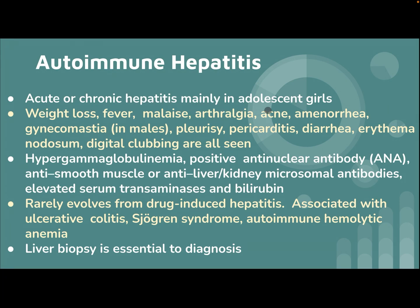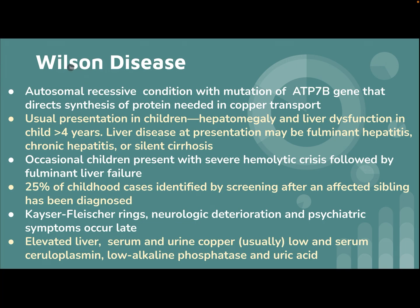Autoimmune hepatitis: presents as acute or chronic hepatitis, mainly in adolescent girls. Features include weight loss, fever, malaise, arthralgia, acne, amenorrhea, gynecomastia in males, pleuritis, pericarditis, diarrhea, erythema nodosum, and digital clubbing. Labs show hypergammaglobulinemia, positive anti-nuclear antibody, anti-smooth muscle or anti-liver kidney microsomal antibodies, and elevated serum transaminase and bilirubin. It is rarely drug-induced and may be associated with ulcerative colitis, Sjogren syndrome, and autoimmune hemolytic anemia. Liver biopsy is essential for diagnosis.